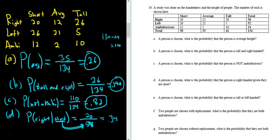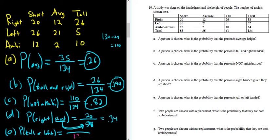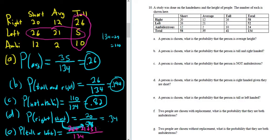Part E. A person is chosen — what is the probability that the person is tall or left-handed? P(tall or left). Whenever you see an 'or' and you have a table, the bottom is the total, 134. As a trick, you just circle the tall people, then circle the left people, and then add up all the numbers. So 26 plus 21 plus 5 plus 26 plus 10. This lets you avoid using the formula.